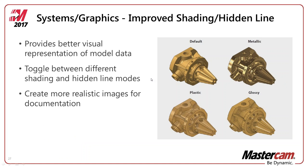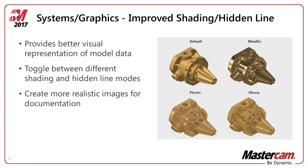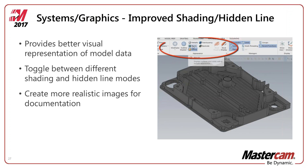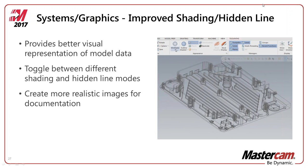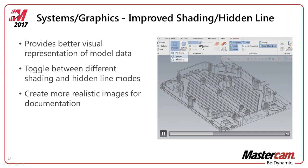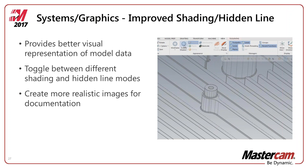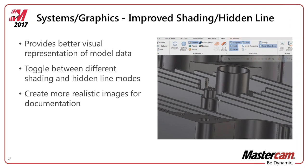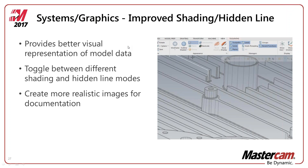That's the general stuff on the interface. Let's get into some system enhancements — we'll talk about analyzing and a few other items added to 2017. We did add some new shading options including metallic, glossy, and plastic ways to view files — more for eye candy or sending a model to a customer. We really revamped the way solids look and edge highlighting back in X7, and this is a progression of that.